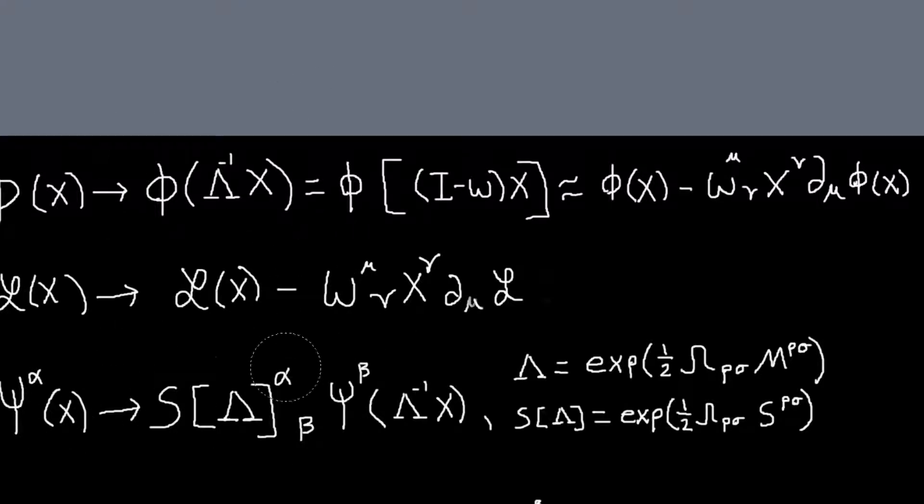So our spinner fields transform like this. And again, so my lambda here, I have two matrices here, lambda and S.